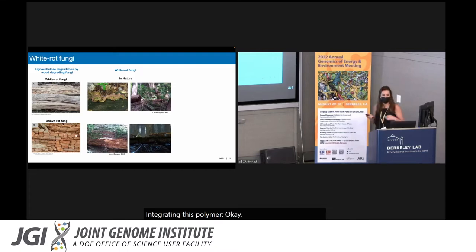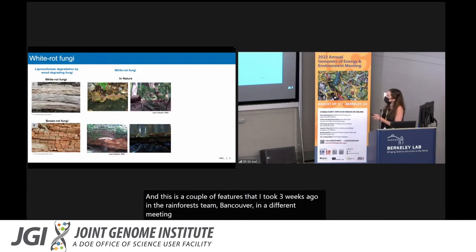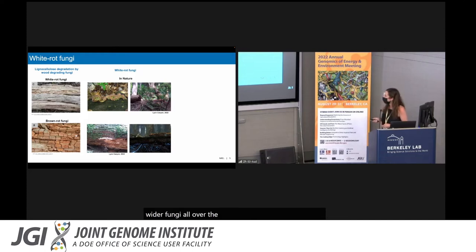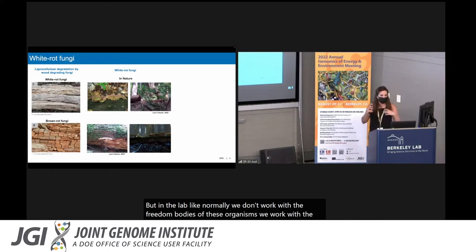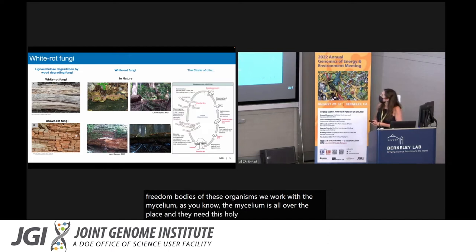How do white rot fungi look like in nature? Here you can see Trametes versicolor. This is known as the turkey tail. This is a couple of pictures that I took three weeks ago in the rainforest in Vancouver. It's just amazing to see how all this wood on the soil is just being colonized by white rot fungi all over the place. That was paradise to me. But in the lab, normally, we don't work with the fruiting bodies of these organisms. We work with the mycelia. As you know, the mycelia is all over the place underneath the soil.